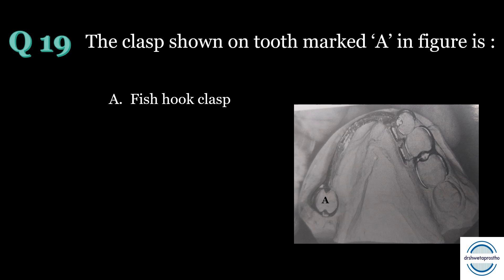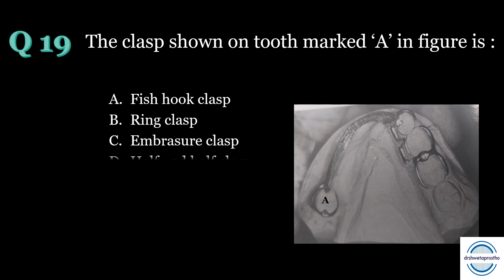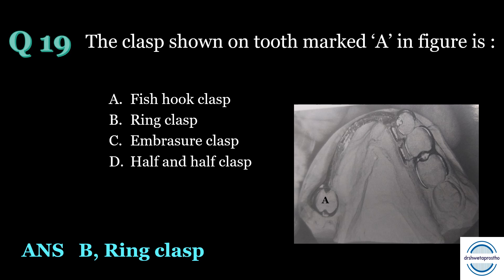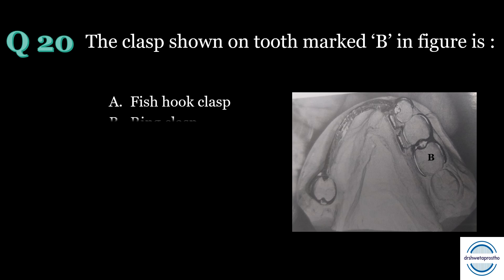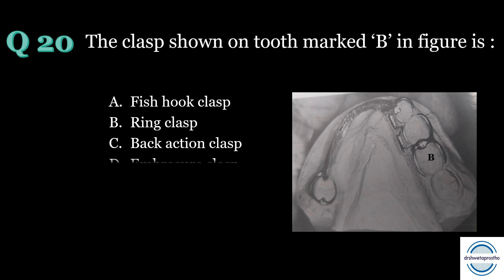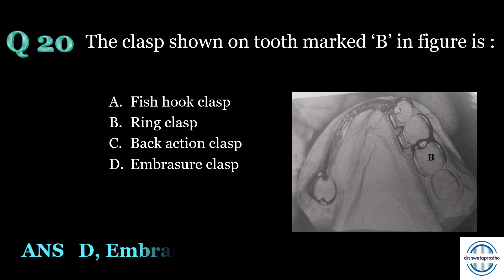Question nineteen: the clasp on tooth marked A is — A. Fish hook, B. Ring clasp, C. Embrasure clasp, D. Half and half. Answer: B, ring clasp — a circumferential clasp encircling nearly all the tooth from its point of origin, mainly indicated in tilted molars. Question twenty: the clasp on tooth marked B is — A. Fish hook, B. Ring clasp, C. Back action, D. Embrasure clasp. Answer: D, embrasure clasp, also known as the Bonwill clasp, with two occlusal rests, two retentive arms, and two reciprocal arms joined in the embrasure area.